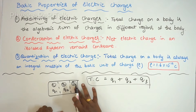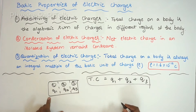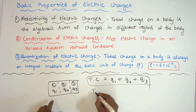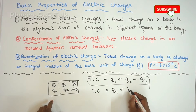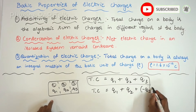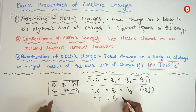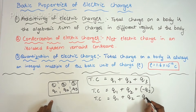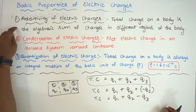Now if region 3 has a charge of minus Q3, then the total charge on the body becomes Q1 plus Q2 plus (minus Q3), which equals Q1 plus Q2 minus Q3. This illustrates the additivity of electric charges — the total charge is the algebraic sum.